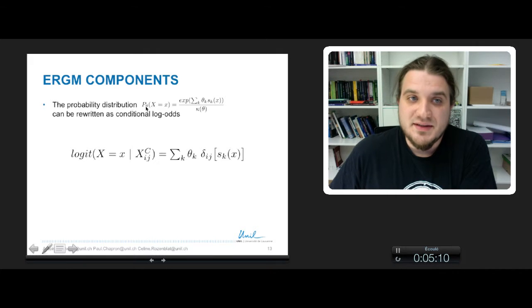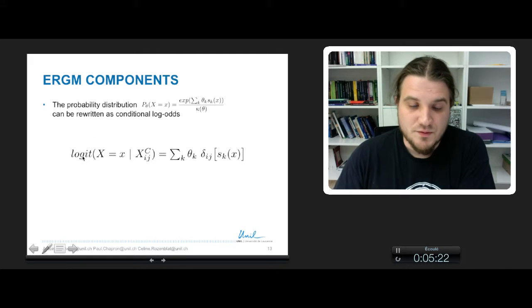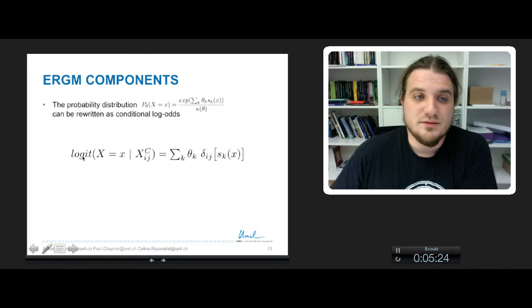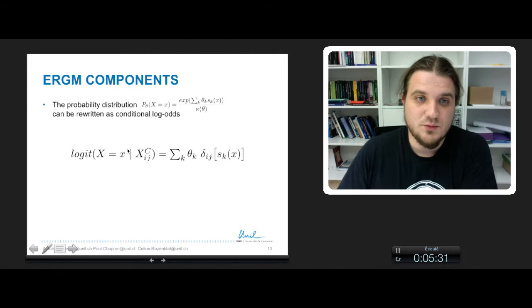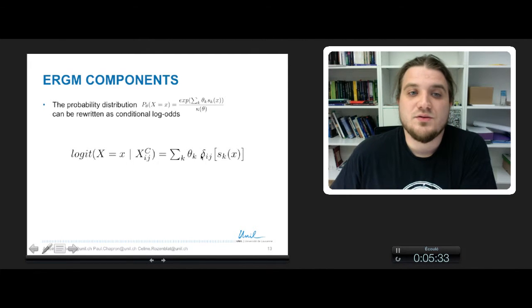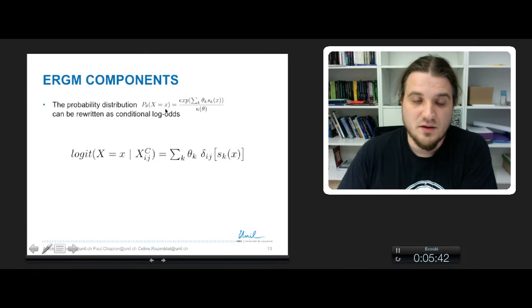So the probability distribution, p theta of capital X being equal to small x, can be rewritten as conditional log odds with a logit expression. And for some various reasons, this expression is very more easy to deal with when you want to try to find the parameters that you want to use.